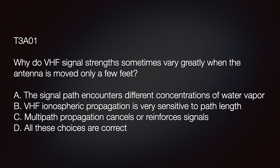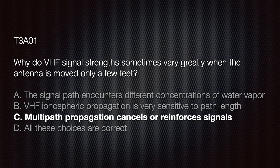The exam question: Why do VHF signal strengths sometimes vary greatly when the antenna is moved only a few feet? Options: A — the signal path encounters different concentrations of water vapor; B — VHF ionospheric propagation is very sensitive to path lengths; C — multi-path propagation cancels or reinforces signals; D — all of these are correct. The correct answer is C: multi-path propagation cancels or reinforces signals.